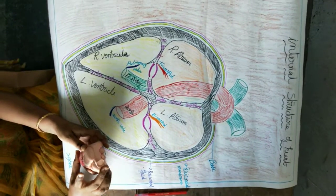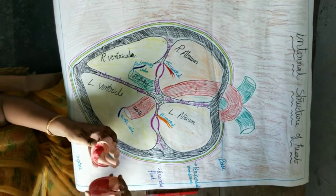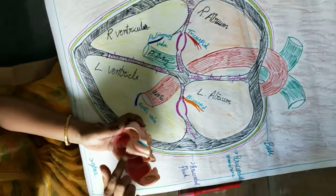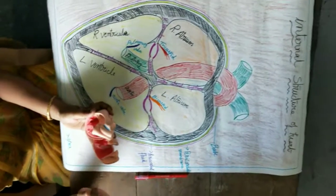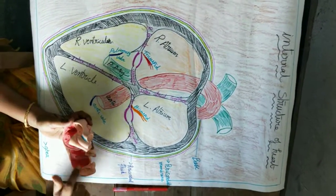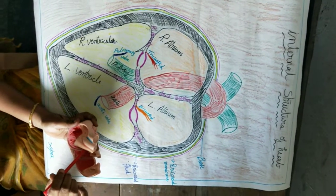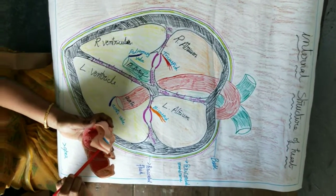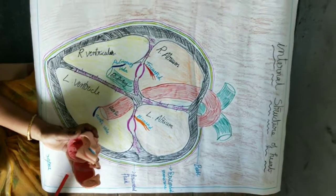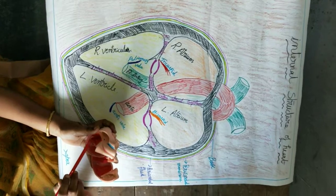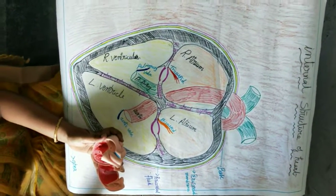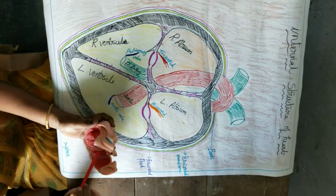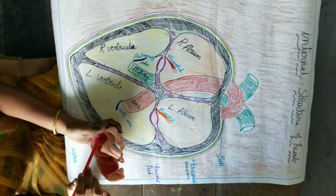Let us look at the internal structure of the heart. Heart is hollow, but the muscular walls divide the heart into four chambers. The upper two chambers are called atriums and the lower two chambers are called ventricles: the left atrium, left ventricle, right atrium, and right ventricle. The ventricles are bigger than the atriums, but the right atrium is bigger than the left atrium, and the left ventricle is bigger than the right ventricle.